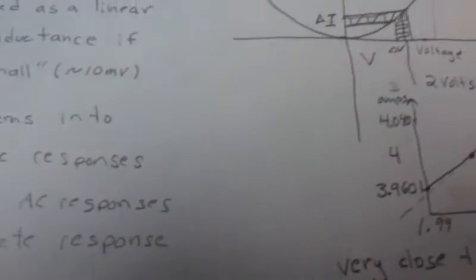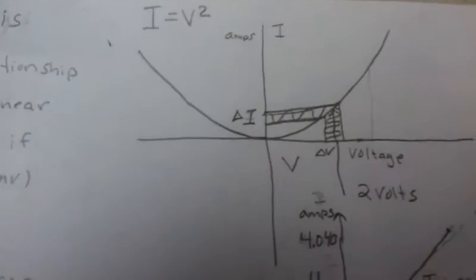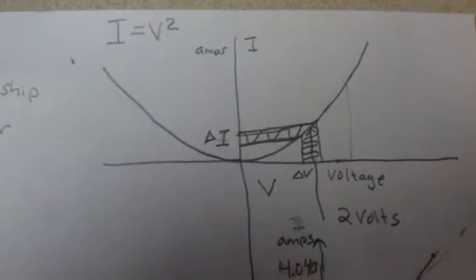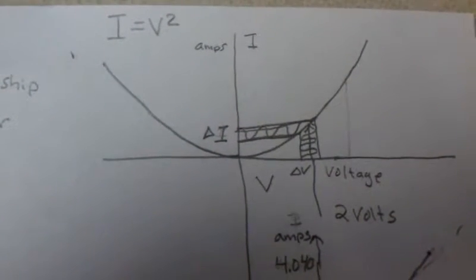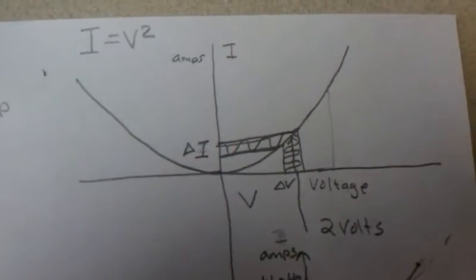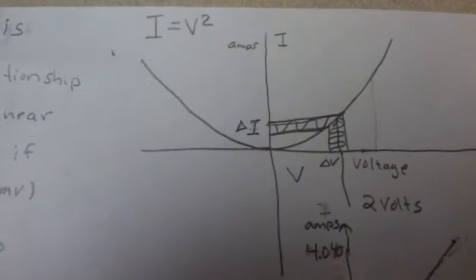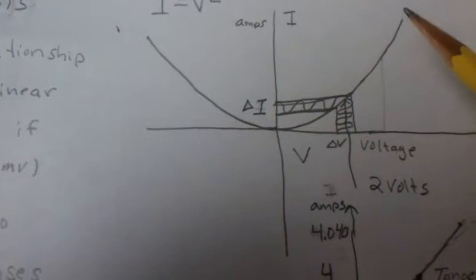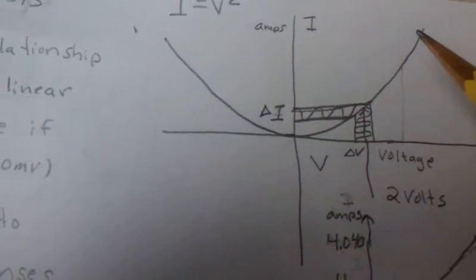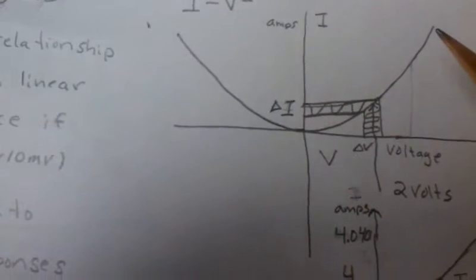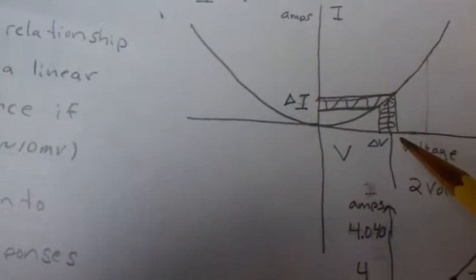To get started, let's try to find the equivalent resistance of a nonlinear equation I equals V squared. We can see this is certainly not a linear relationship, it doesn't follow y equals mx plus b.